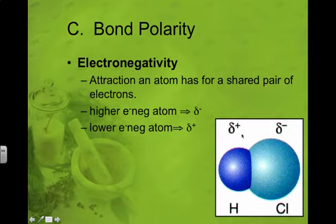So that just means a partial positive and a partial negative. Now if this was a completely ionic bond, if it was completely ionic, it would have a positive and a negative charge, not partial anything.